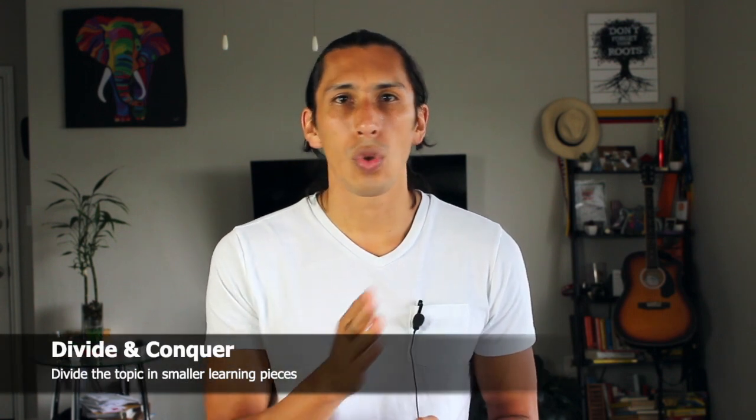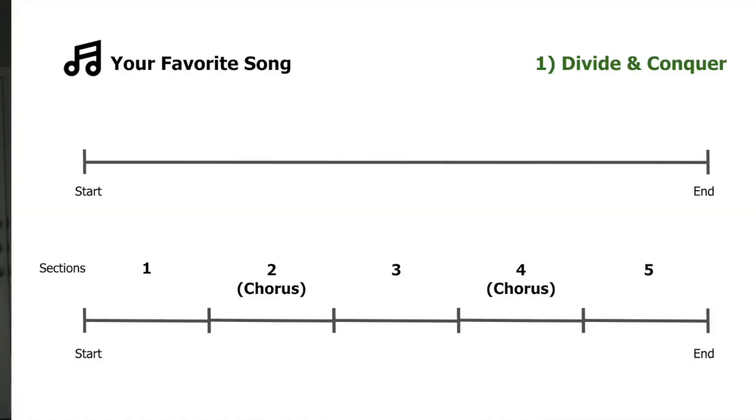In order to learn any topic, we need to deconstruct it into several smaller pieces. In order to learn to play the guitar, we need to realize the structure of a song. This structure can be divided into several sections — one, two, three, etc. — some of which are going to repeat themselves. That's what we call the chorus. This division is what I call divide and conquer, and it's essential in order to grasp bigger ideas, bigger concepts, or even bigger practice like the guitar.